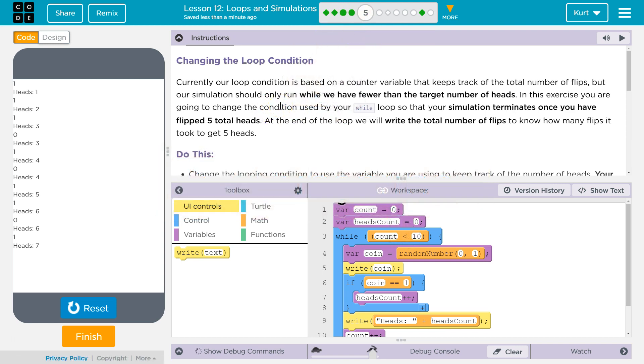Changing the loop condition. And this thing is the condition. Currently our loop condition is based on a counter variable that keeps track of the total number of flips. But our simulation should only run while we have fewer than the targeted number of heads.